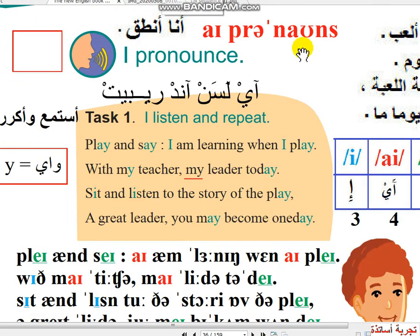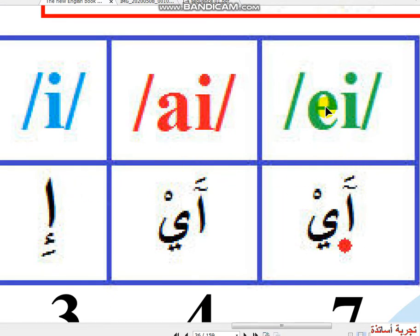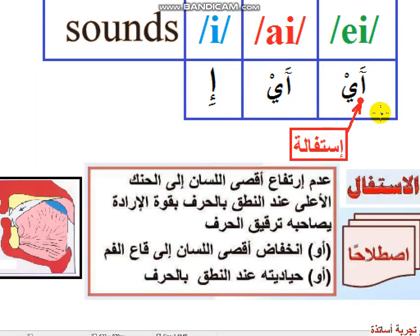أصوات جديدة هي ثلاث أصوات. الأصوات الثلاثة هي: A، I، E. هذه النقطة في العربية واسمها الاستفالة — والاستفال هو عدم ارتفاع أقصى اللسان إلى الحنك الأعلى عند النطق بالحرف، يصاحبه ترقيق الحرف. أو انخفاض أقصى اللسان إلى قاع الفم. شوف الفرق بين A وبين I. عكس الاستفال هو الاستعلاء. A — خفيفة، A، I.